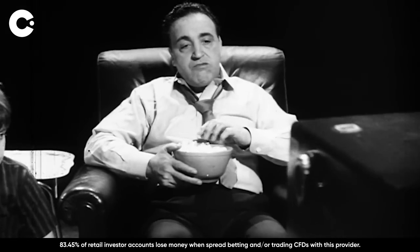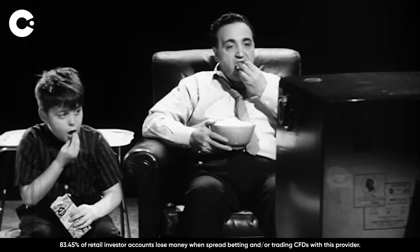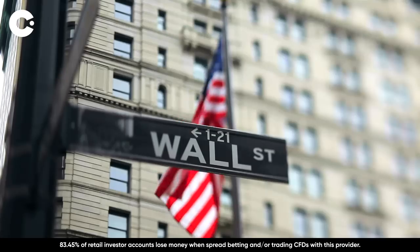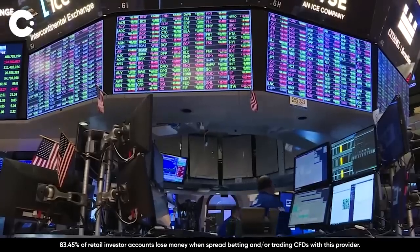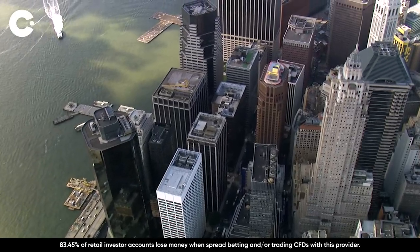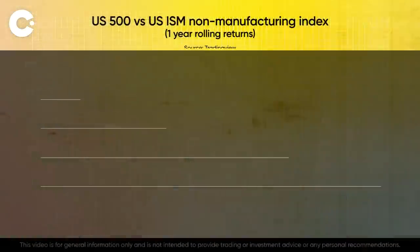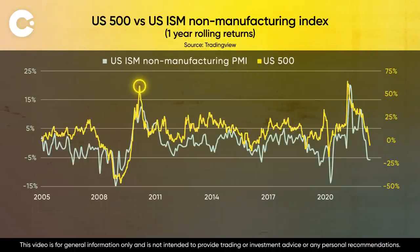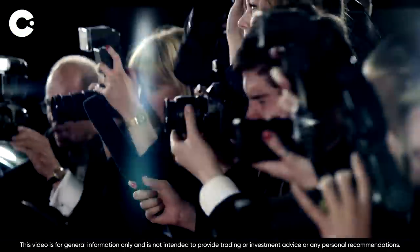We've identified another index that mirrors and at times predicts when and where the ISM is going to move. It's the S&P 500, or US 500 — an index of the 500 biggest companies in America — measuring one-year rolling returns. When the US 500 fell from highs in 2010 and 2021, the ISM did the same shortly after. There's also a key figure that might tell us when a recession has reached the floor.